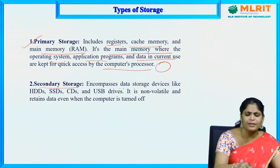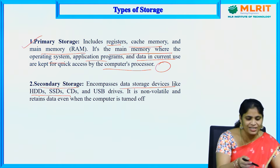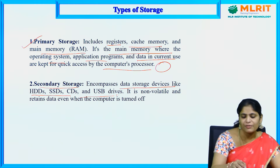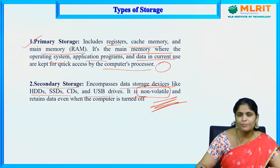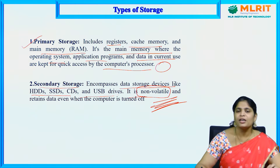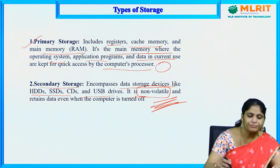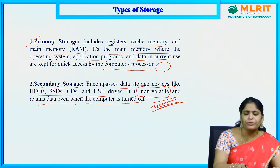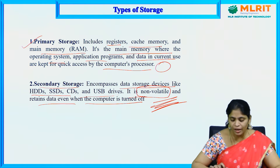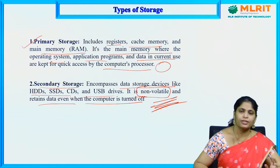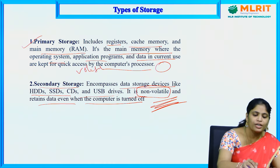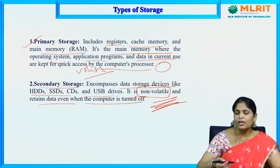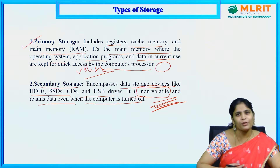Secondary storage encompasses data storage devices like HDDs, SSDs, CDs, and USB drives. It is non-volatile — meaning whenever data is stored in secondary storage, it will not be lost and is retained even when the computer is turned off. That is the basic advantage of secondary storage. Primary memory, on the other hand, is volatile — if there is a power failure while processing data, that data may be lost.